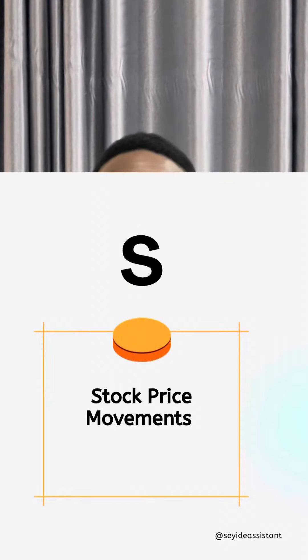S stands for stock price movement. Before you put your money in the shares of any company, you want to look at what is the history of movement of that stock price in the last two to three years. Something that has been stagnant for the last five years is different from something that has moved progressively — slowly, but it is moving. It has moved in the last five years, so it has every tendency that it will move again.